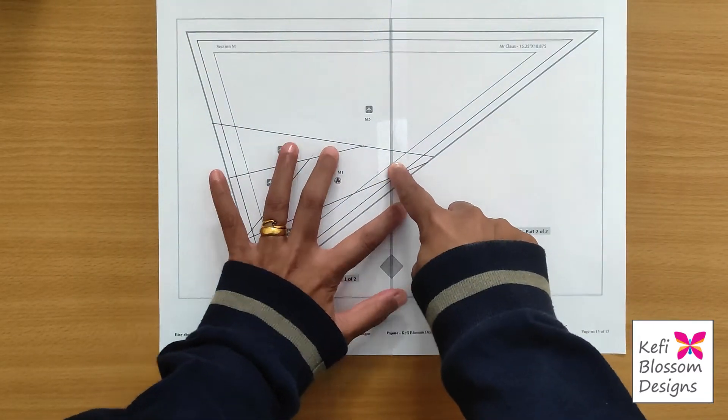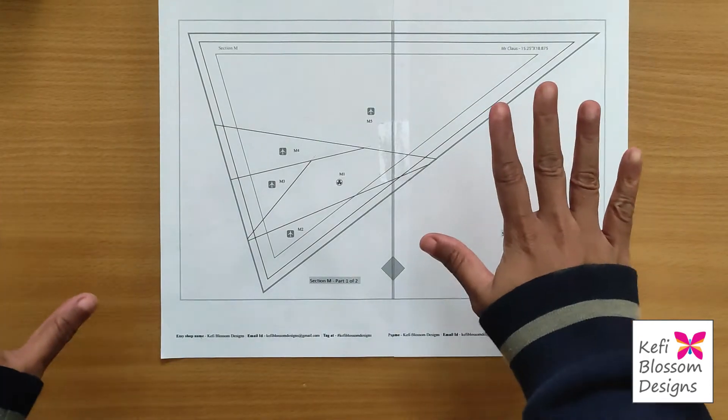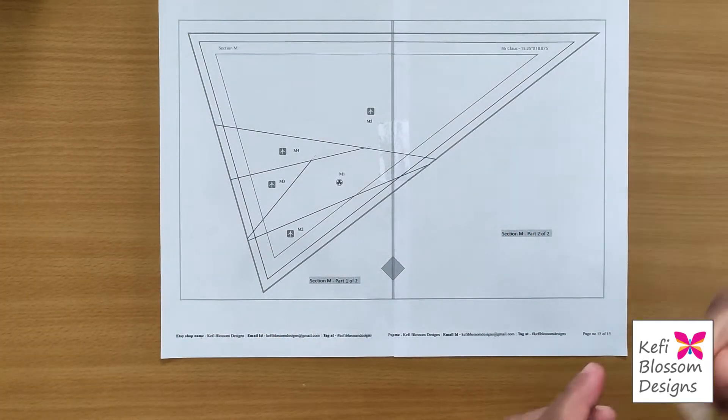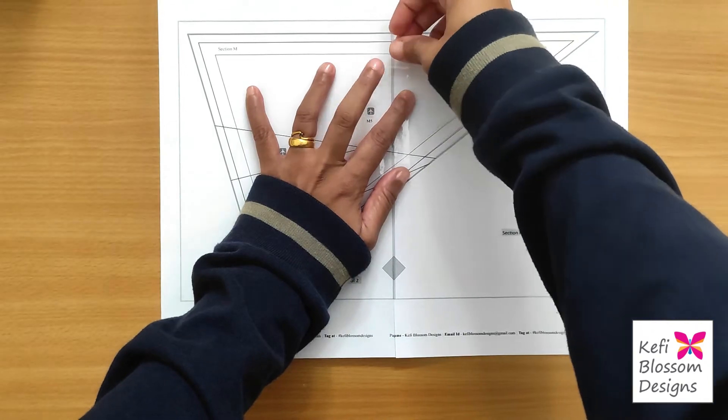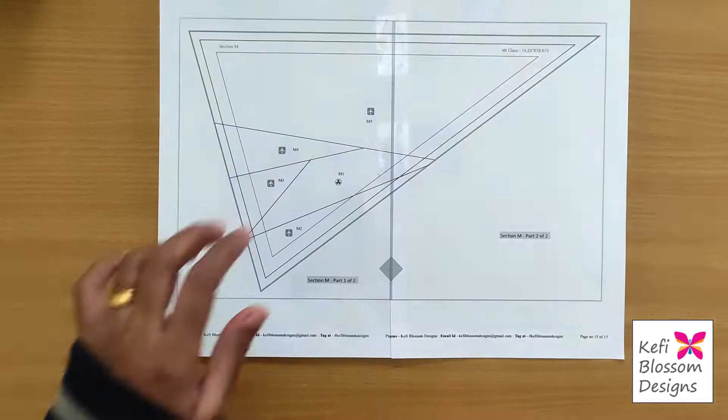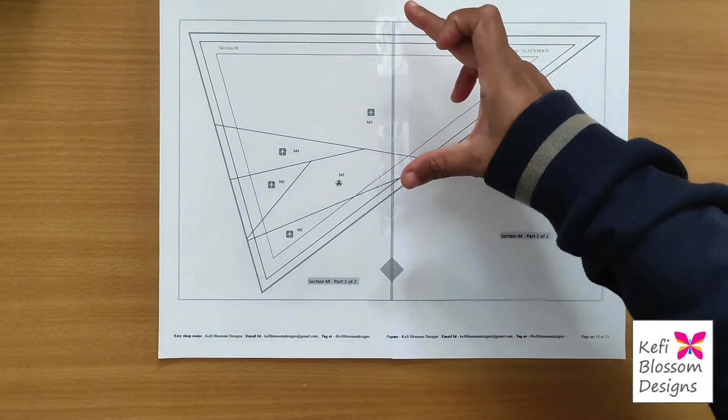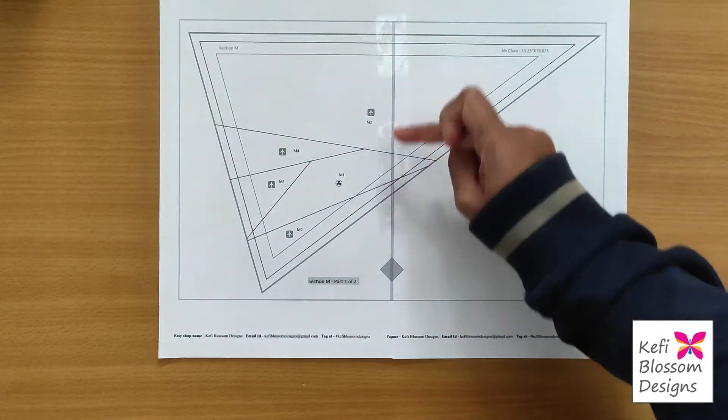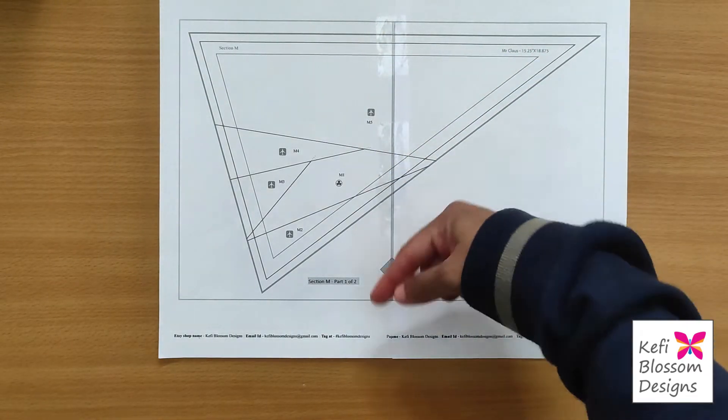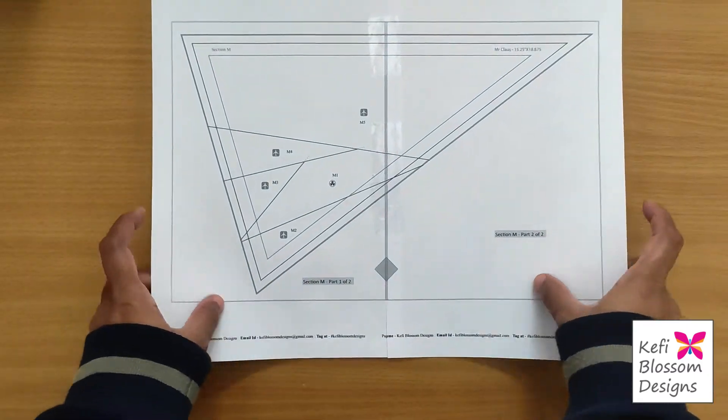Preferably where all the lines are meeting. So once this is done, then your paper will be in place. And then you can tape remaining portion. Since this is a small area, I'm just taping the ends. If you want, you can put a complete cello tape.